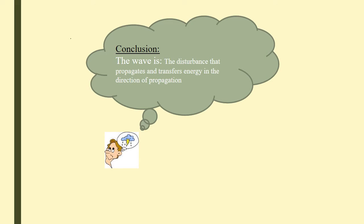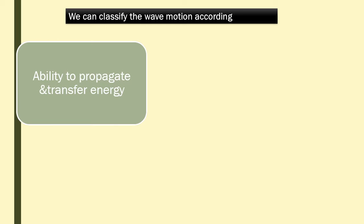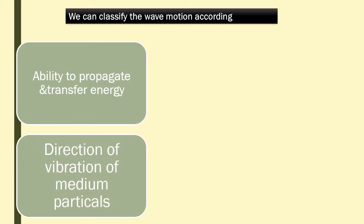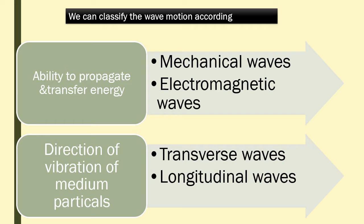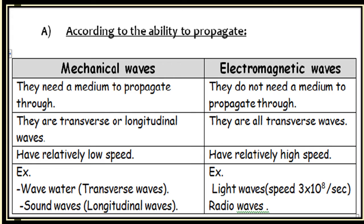We can conclude that the wave is a disturbance that propagates and transfers energy in the direction of wave propagation, while medium particles vibrate in place. We can classify wave motion according to: the ability to propagate and transfer energy, and the direction of vibration of medium particles. Based on these criteria, waves are classified into mechanical and electromagnetic waves, and into transverse and longitudinal waves.